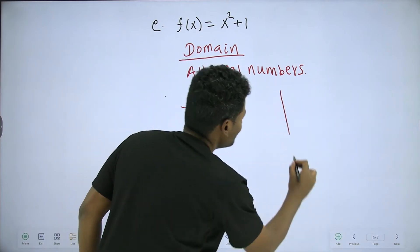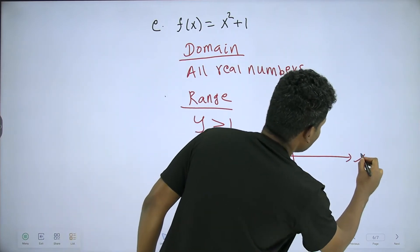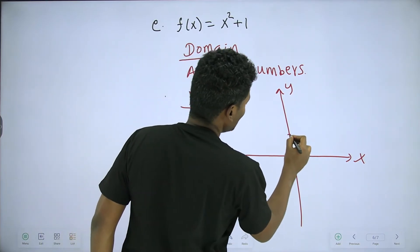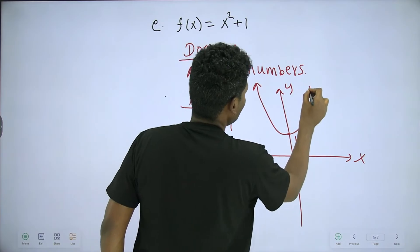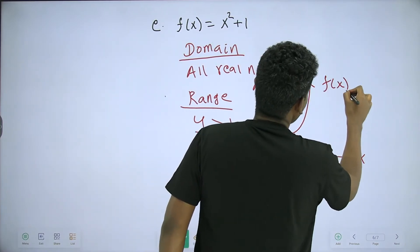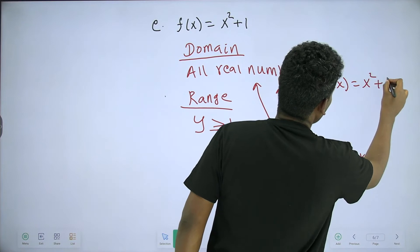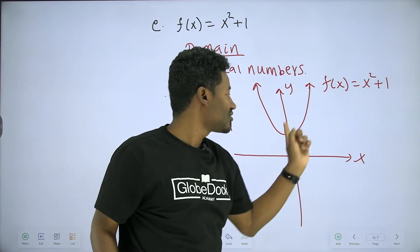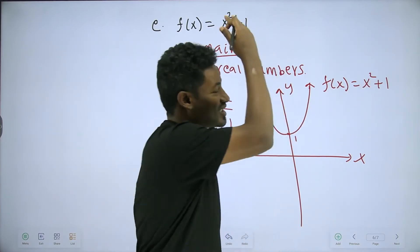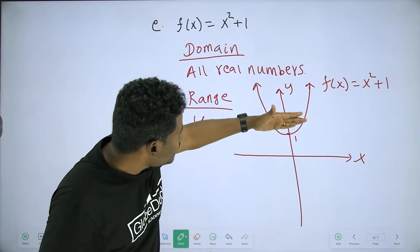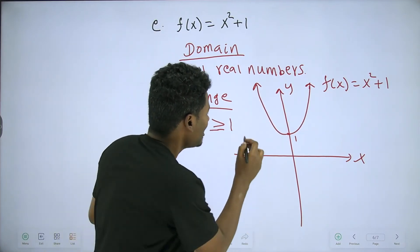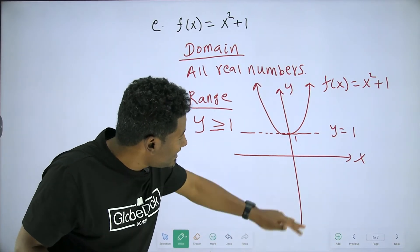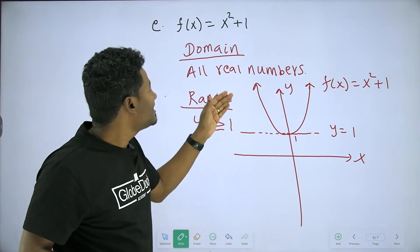We have the graph to plot. f of x is equal to x squared plus 1. When x is zero, y equals one. The graph shows the minimum point at y equals one, because y is equal to one at the bottom line.